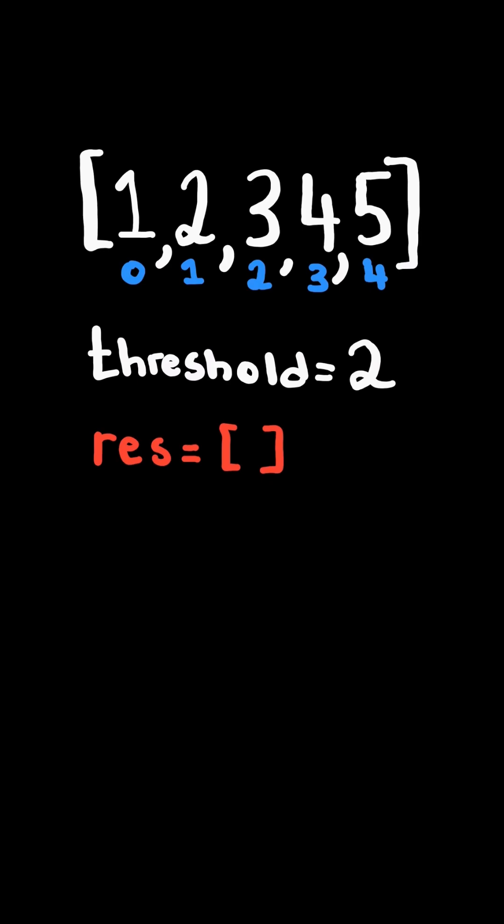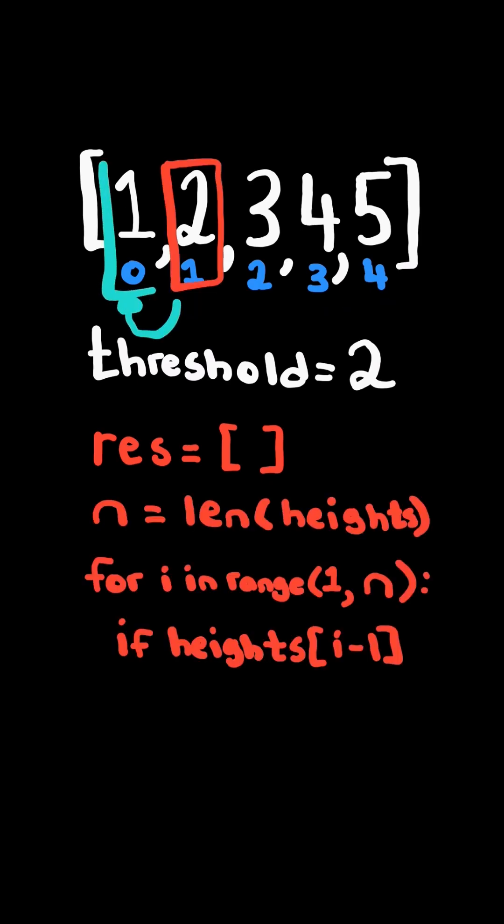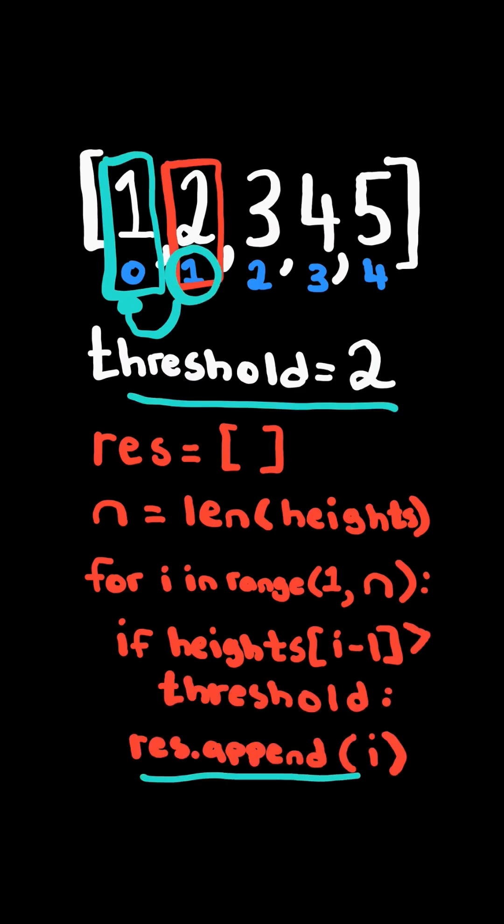we will initialize a resulting list and iterate from the second mountain onwards. And we check if the previous mountain is greater than threshold. And if so,